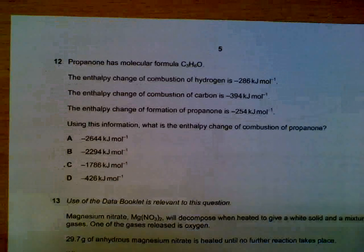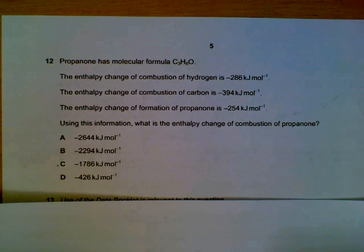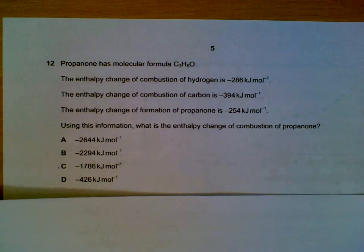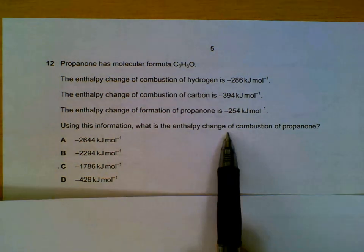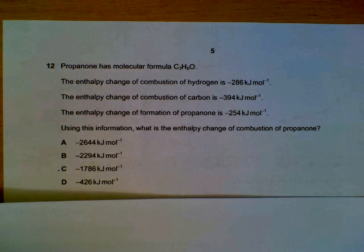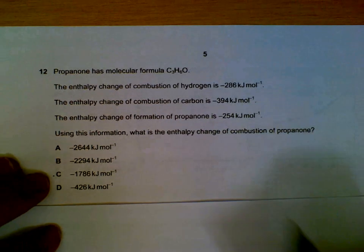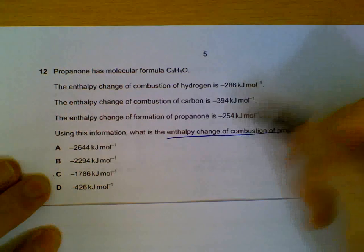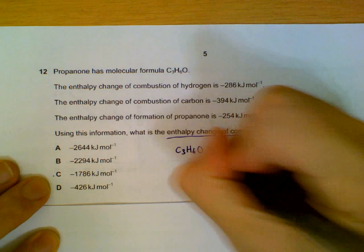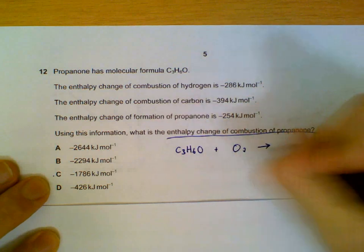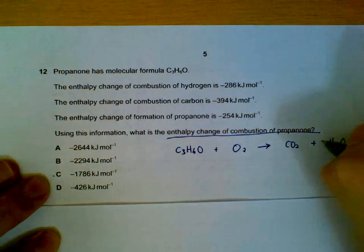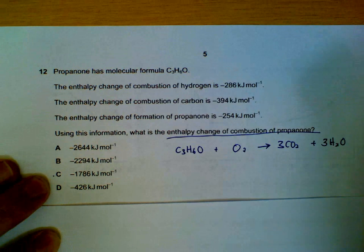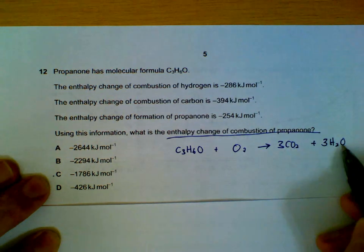Number 12: propanone — molecular formula C₃H₆O. We have information on the combustion of hydrogen, carbon, and the formation of propanone. We want to find the enthalpy change of combustion of propanone using this information. It's useful to write out the combustion equation first, and then see how we can fit in all the given data. We have C₃H₆O plus oxygen giving carbon dioxide and water.